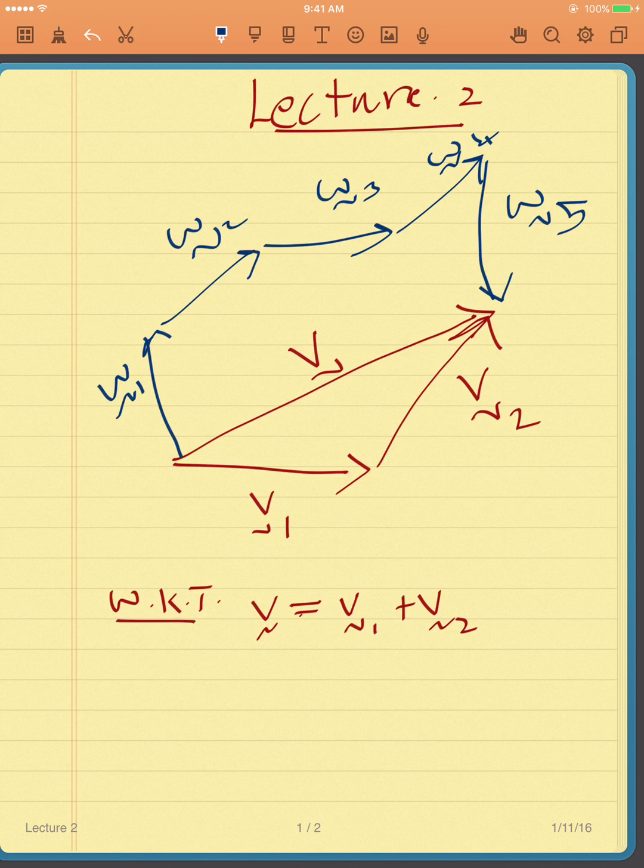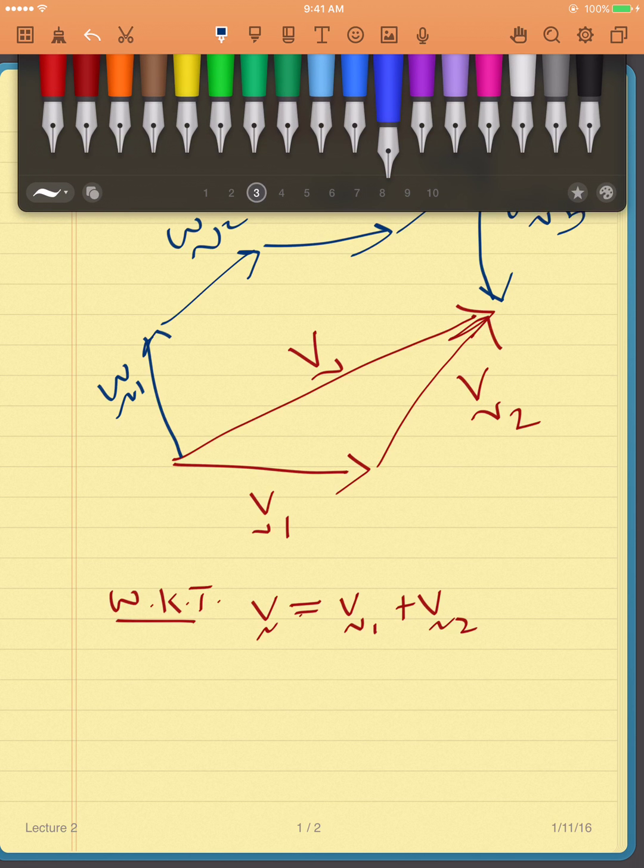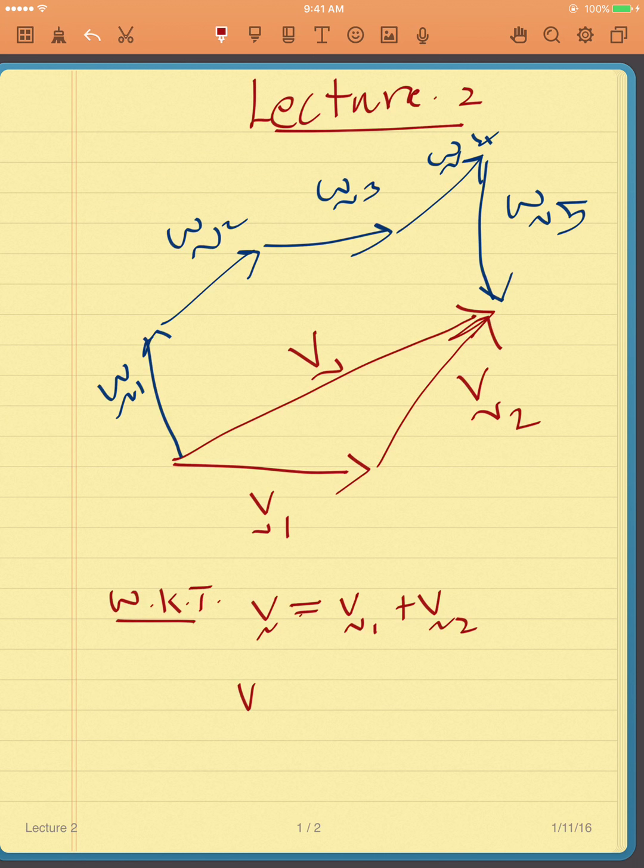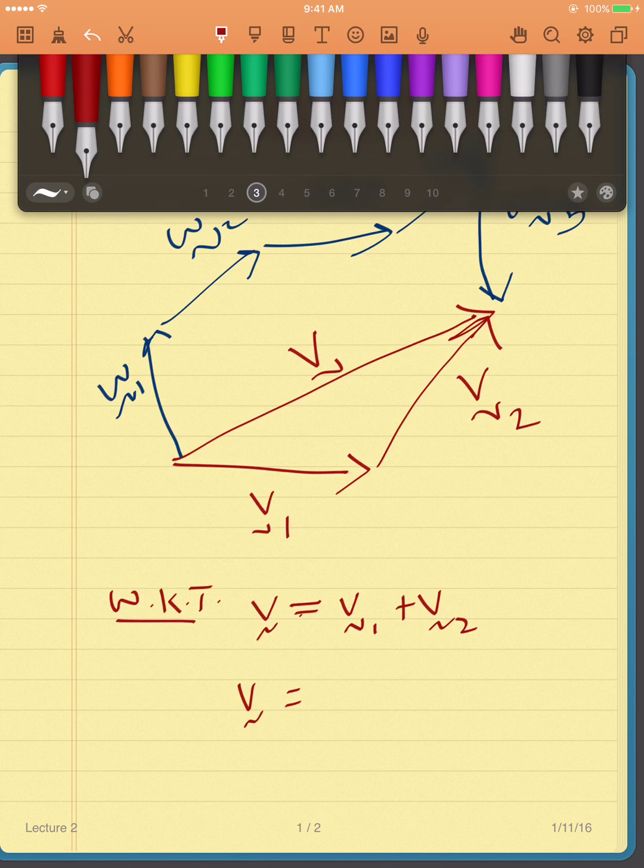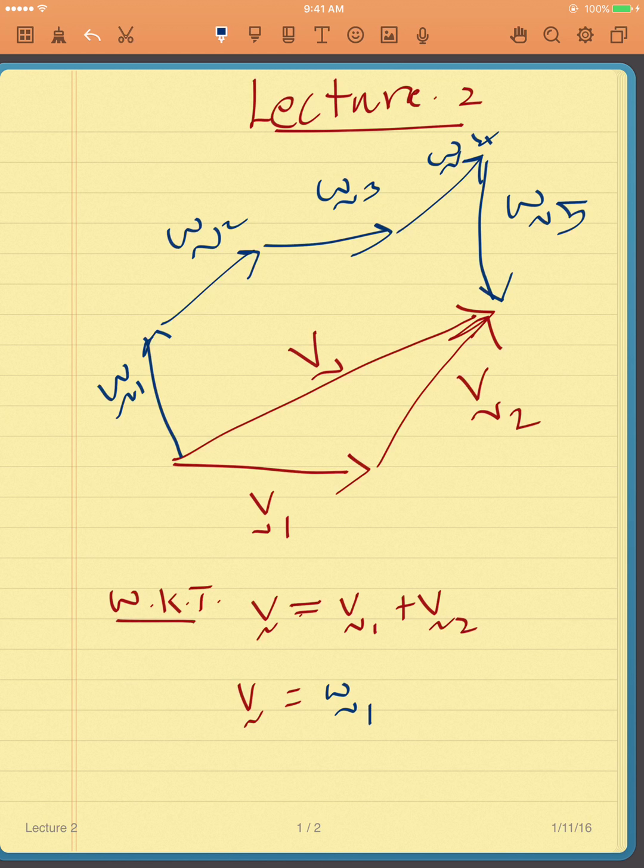So clearly vector v is also equal to the vectors w1, w2, all the way up to w5. So you could add the vectors w1 through w5 and they will still give you the same resultant vector v, and this tells us that they're not unique.